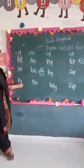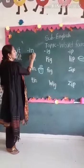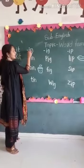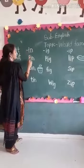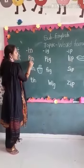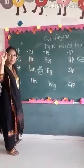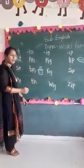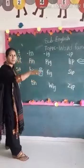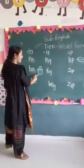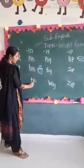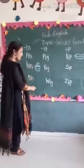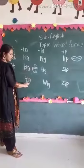First, P-E-N: 'pin'. Then B-E-N: 'bend'. And then T-E-N: 'tin'. These are words from the '-EN' word family.